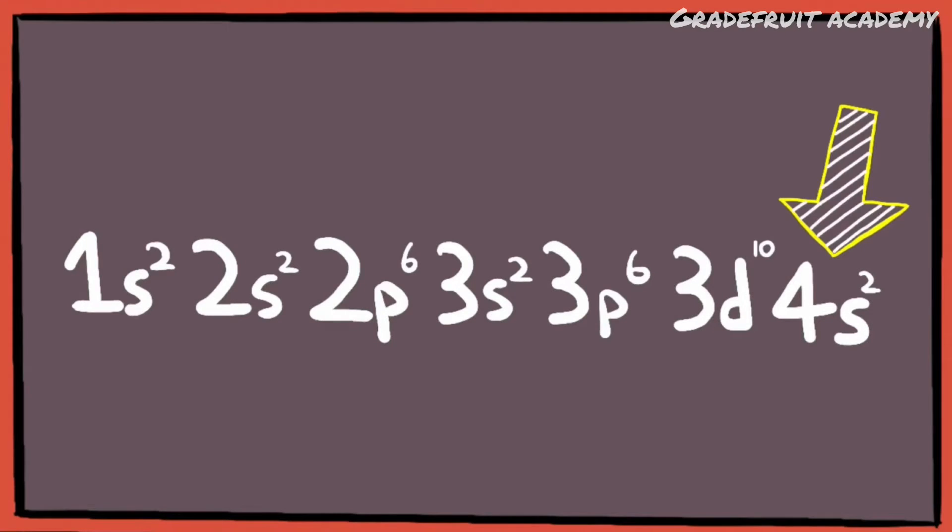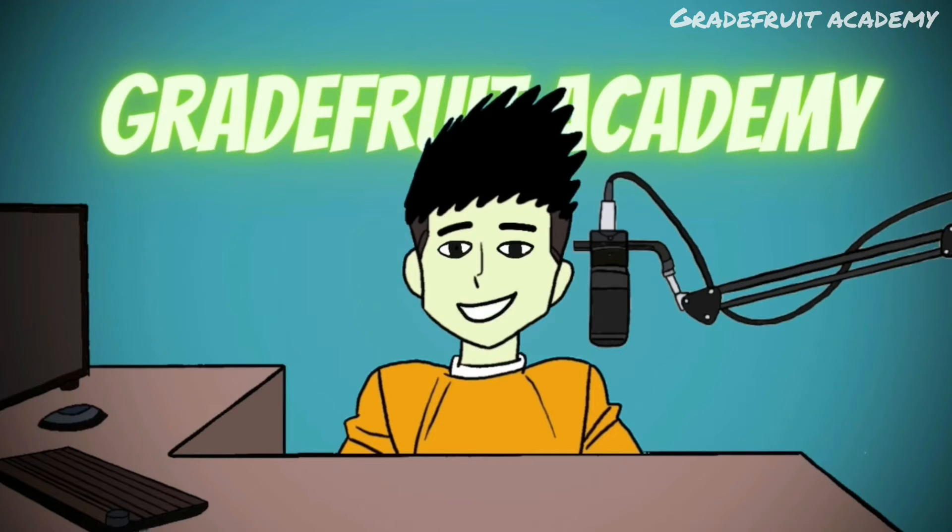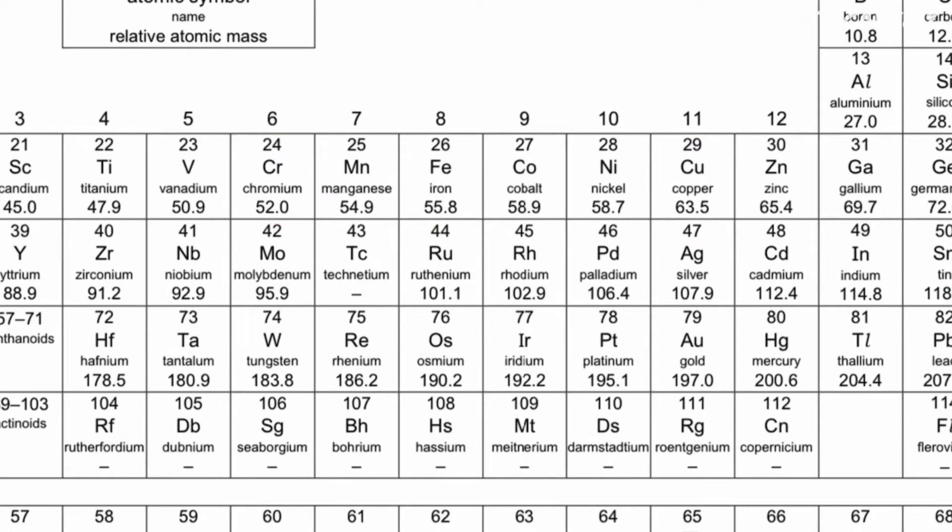The reason why we write the 4s orbital first is because it has a lower energy level compared to the 3d orbital. This applies to all elements except for copper and chromium.